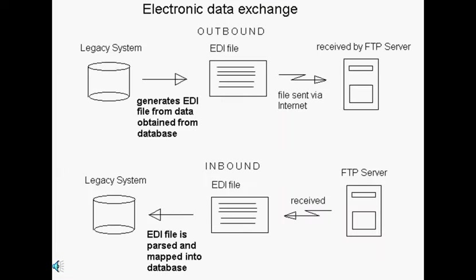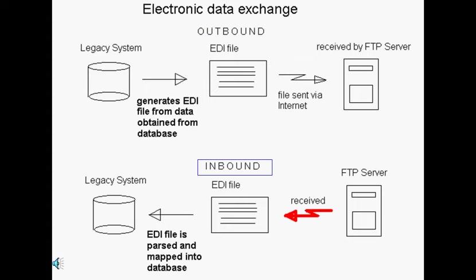There are two well-defined processes in EDI: the outbound process and the inbound process. The outbound process is when an EDI file gets generated from data out of an existing system and then sent to a trading partner. The inbound process is when an EDI file is received from a trading partner and its data gets parsed and mapped into an existing system.